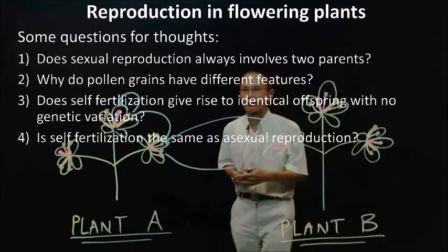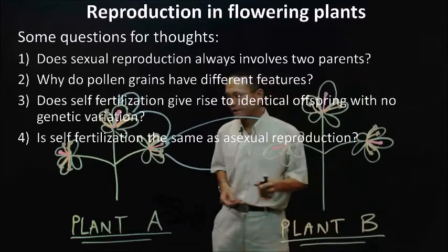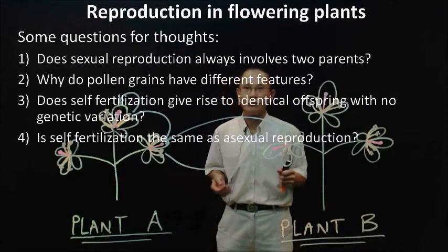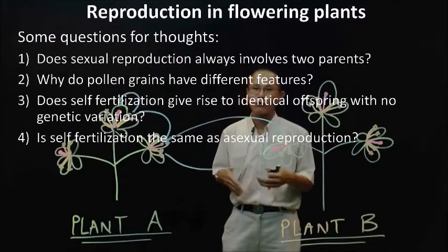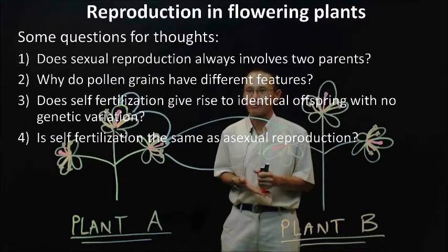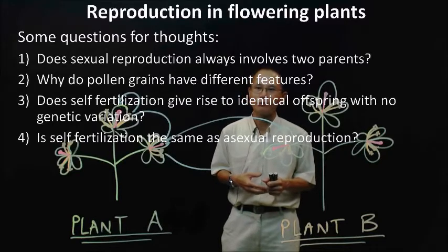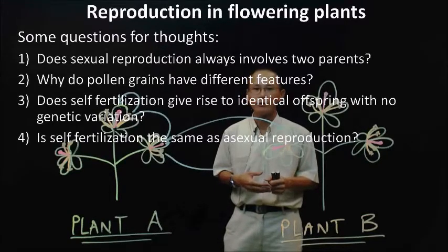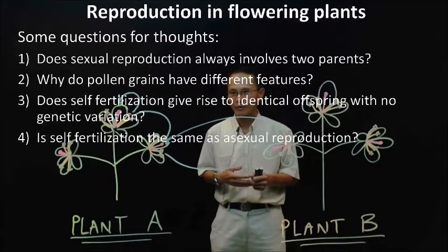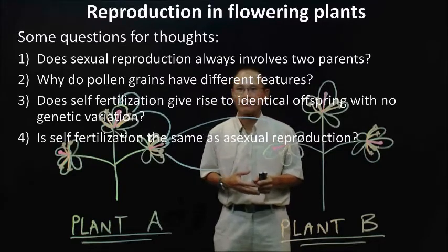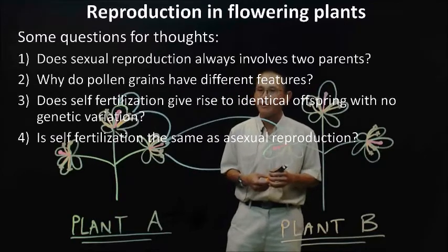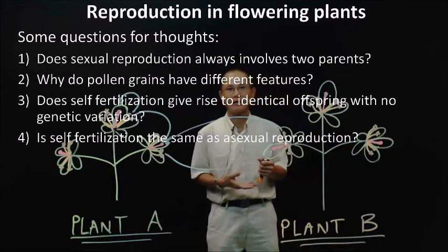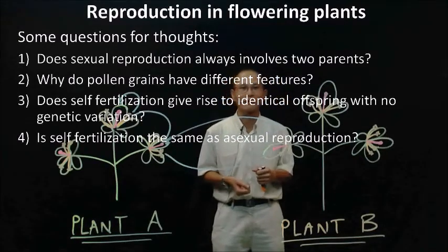Now there are some food for thought — these are extension questions which you can go into the quiz and try out, and maybe write out your response. Does sexual reproduction always involve two parents? Why do pollen grains have different features? Does self-fertilization give rise to identical offspring with no genetic variation? Is self-fertilization the same as asexual reproduction?